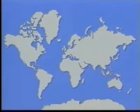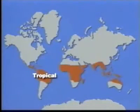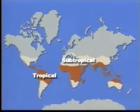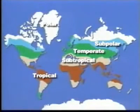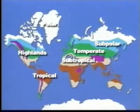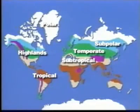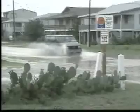Geographers divide the world into six main climatic regions: tropical, subtropical, temperate, subpolar, polar, and highlands. Each of these climatic regions is defined by both temperature and precipitation. For instance, places with a subtropical climate would be described as having hot dry summers and cool rainy winters.